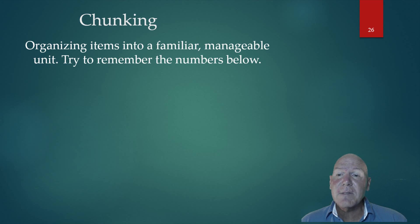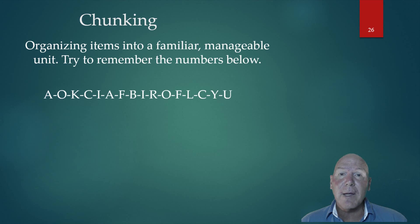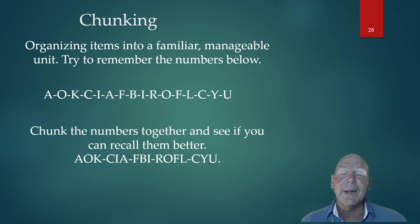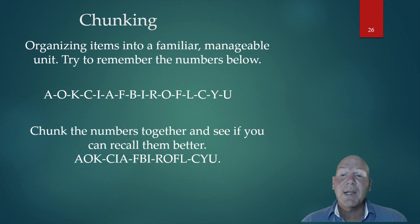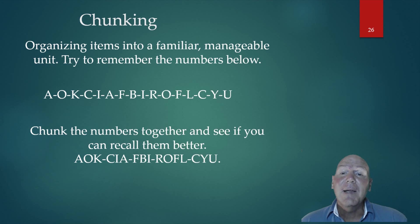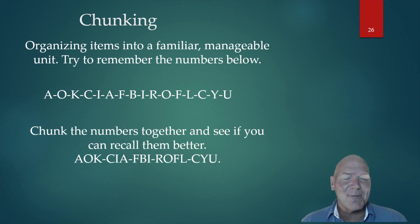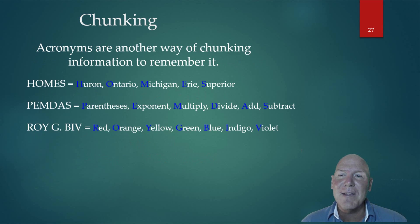For example, try to remember these letters. If you chunk them together in a meaningful way — like A-OK, CIA, FBI, ROFL, or CYU — you would be able to remember all of those letters because you could break them back down. So your working memory thinks you remembered five things, but actually you remembered all of the letters. You can fool that short-term system to get more information in there.